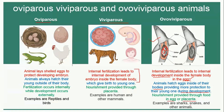Moreover, snakes and other animals are also examples of ovo-viviparous animals. So that was all about oviparous, viviparous, and ovo-viviparous animals. If you have any questions, you can ask in the comment section — I'll see you in the next video.